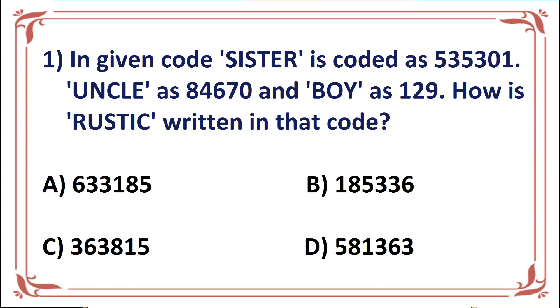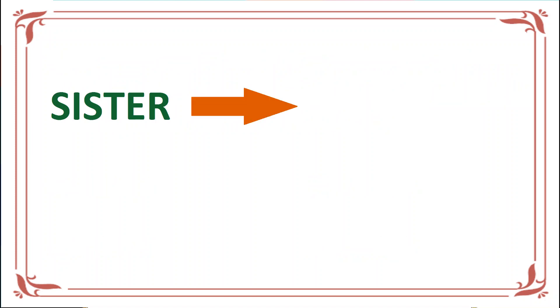So what can we do to use this code? What we need to do is decode SISTER. Now, what code is given here? 535301. We need to see SISTER has 6 letters in total, and here the numbers are 535301, which is total 6 digits.